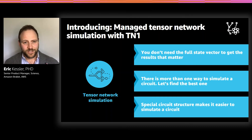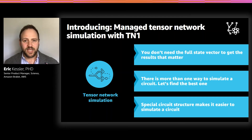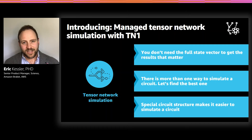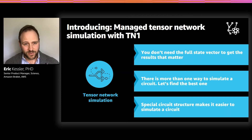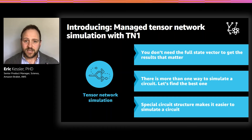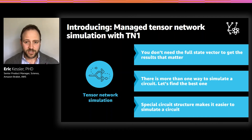TN1 and tensor network simulations on Braket are really based on three key insights. First, you actually don't need the full state vector to get the results that matter — and that allows you to go past the memory bottleneck we discussed. Second, there's more than one way to simulate a circuit. You don't need to greedily compute all the gates one by one. TN1 actually tries to find the best strategy first and then performs the computation after it has found a suitable contraction path. And third, many circuits have special structure, and we try to find that structure first — and if we find such structure, it can make it much easier to simulate a circuit compared to a brute-force approach.